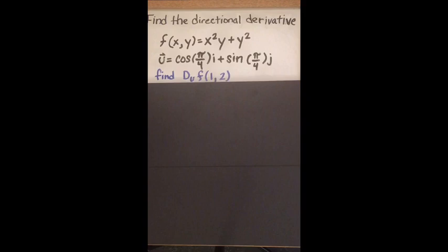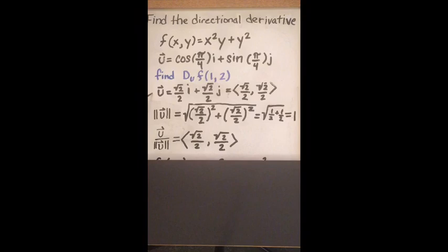Find the directional derivative of the function in the direction of u at the point (1, 2). u can be written as (√2/2)i + (√2/2)j. The magnitude of u turns out to be 1, so it is already a unit vector. Notice that u divided by its magnitude doesn't change a thing, and we need that to start.